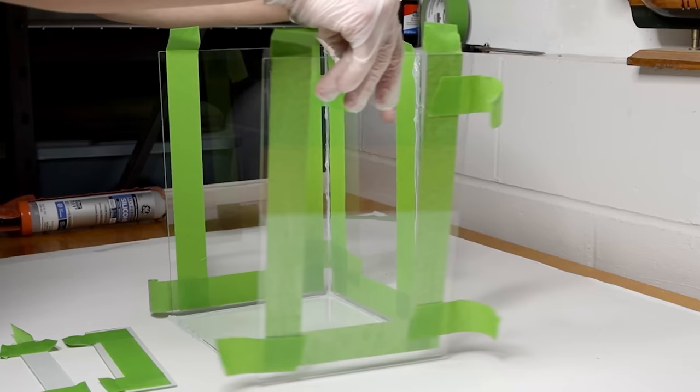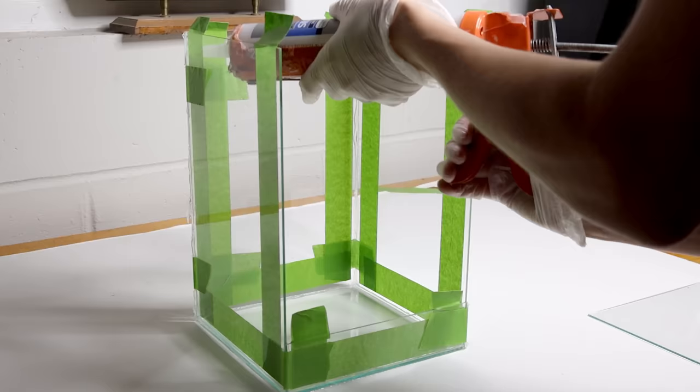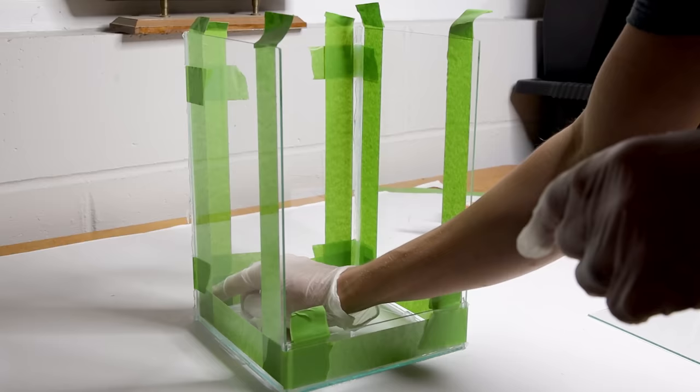The only difference with this one is how the front is built. I only attached the bottom piece at first. This will make it more rigid for when I add the remaining piece. I applied silicone to the inside, smoothed it out, and removed the tape. I let it cure for a few hours.